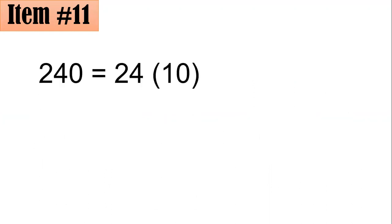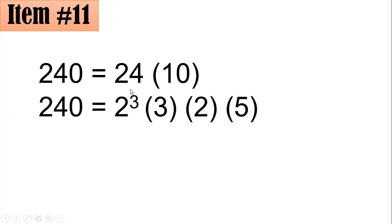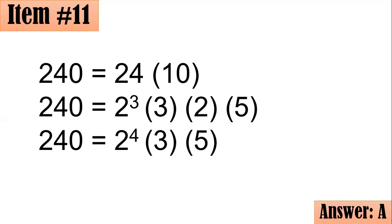For this case, we could express 240 as the product of 24 and 10. For the 24, you could check that it's equal to 2³ times 3. 2³ is 8, and 8 times 3 gives you 24. For 10, it's 2 times 5. From here, you can get the product of 2³ and 2, which is 2⁴ because if you multiply numbers having the same base, you copy the common base and add their exponents, 3 plus 1 is 4. Then simply copy the 3 and 5. Hence, if you answered letter A, congratulations, you got it right.